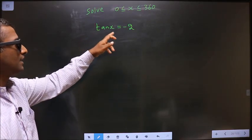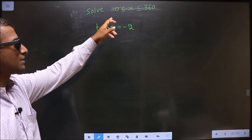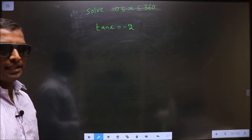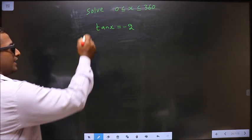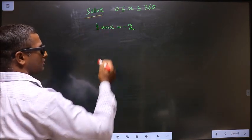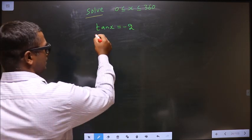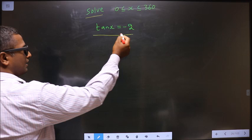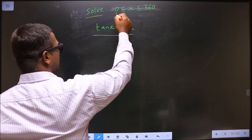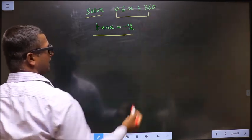Solve tan x equal to minus 2 where x lies between 0 to 360 degrees. They told you to solve, so you need to find the values for x satisfying this equation and also x should lie between 0 to 360 degrees.